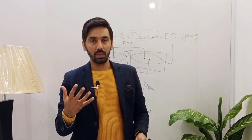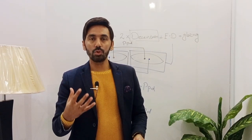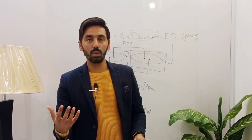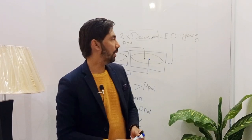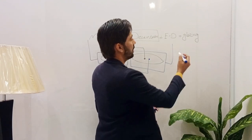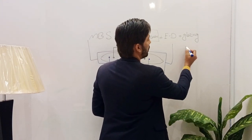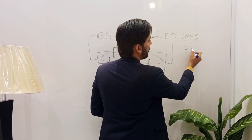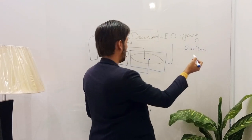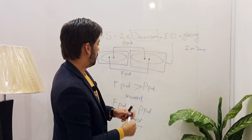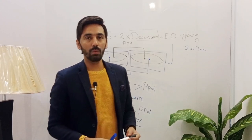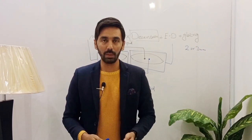Glazing refers to the material of the blank that is used for cutting and grinding. This value is variable — you can select 2 mm for glazing or 3 mm; it is your choice. Now let's solve an example for the minimum blank size.